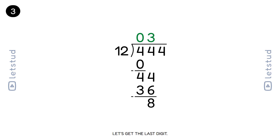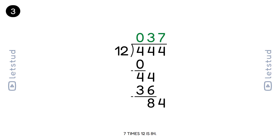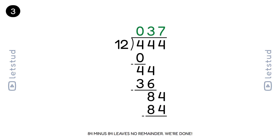Let's get the last digit. We have 84. How many times does 12 fit into 84? It fits 7 times. We brought down the last 4, making it 84. 12 fits into 84 exactly 7 times. 7 times 12 is 84. 84 minus 84 leaves no remainder.